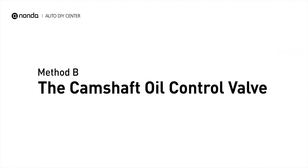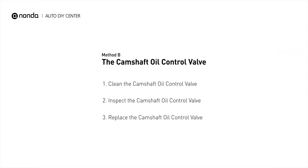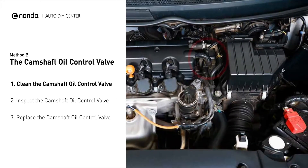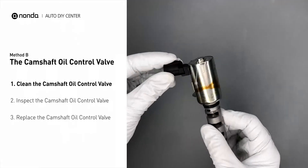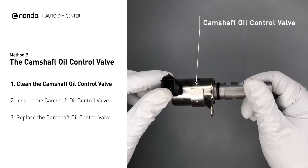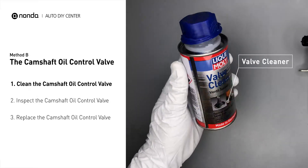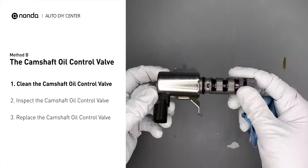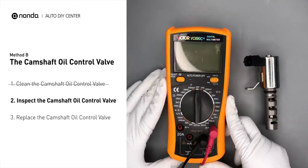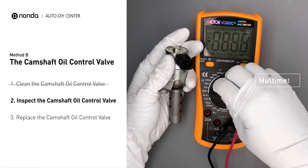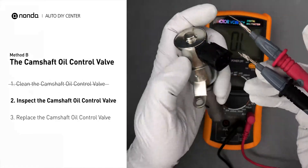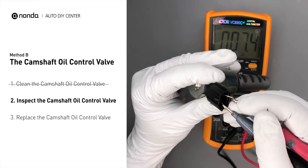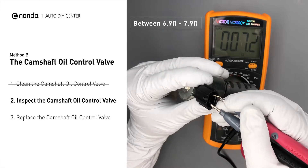Method B: the camshaft oil control valve. The camshaft oil control valves are usually located in cars that have engines with variable valve timing systems. Carefully remove the camshaft oil control valve from the engine. Use a valve cleaner to clean the camshaft oil control valve. Then use a multimeter to perform a test on the camshaft oil control valve. In an ambient temperature of 68 degrees Fahrenheit, the valve resistance should be between 6.9 ohms and 7.9 ohms.